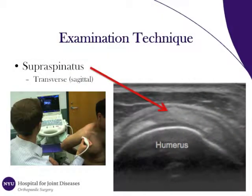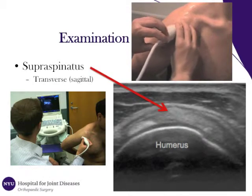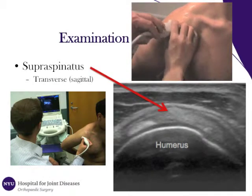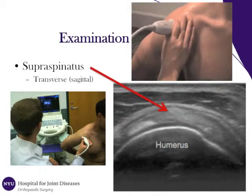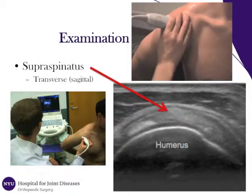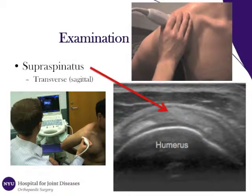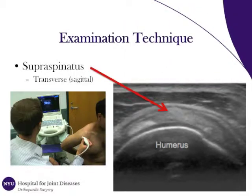The supraspinatus tendon is also imaged in the transverse plane. This is done with a simple 90-degree rotation of the probe. The patient is seated in the same position with the arm and shoulder extended and internally rotated. The supraspinatus tendon is demarcated by the red arrow.